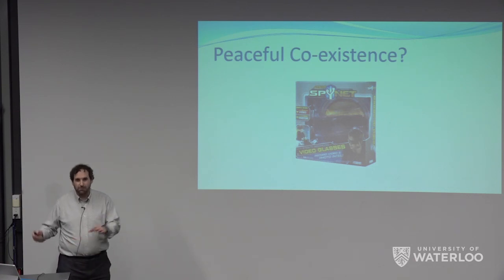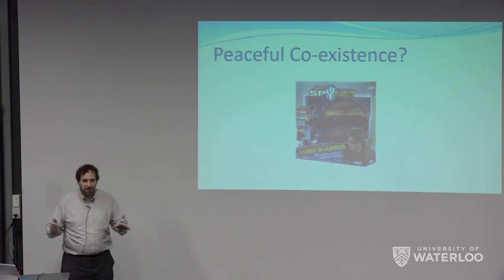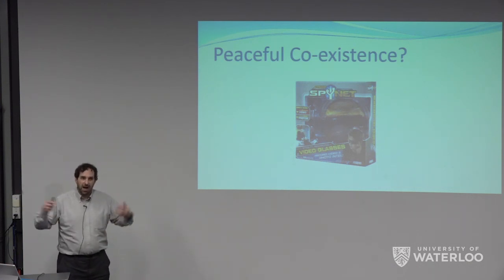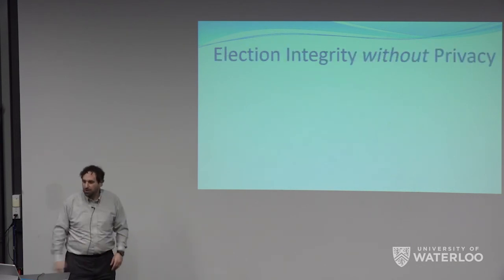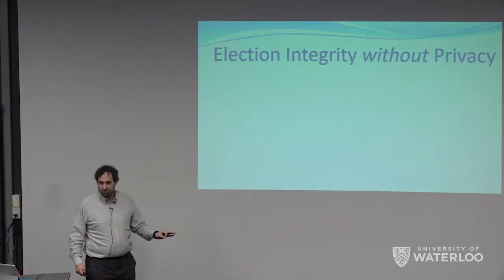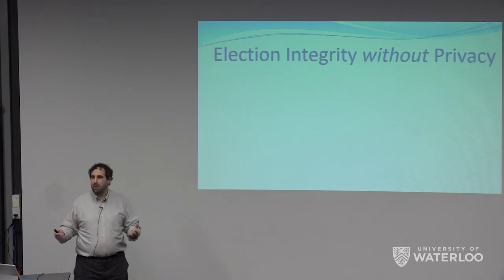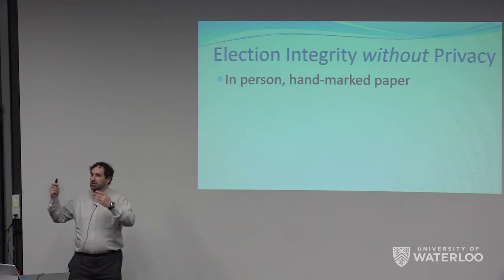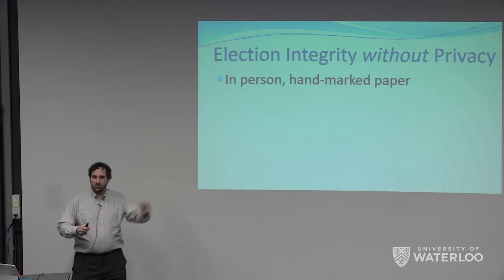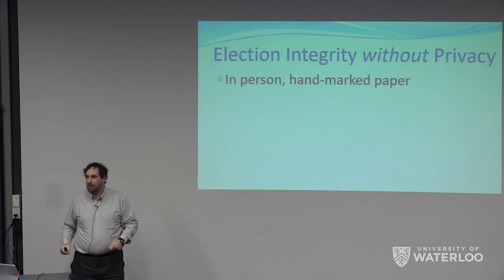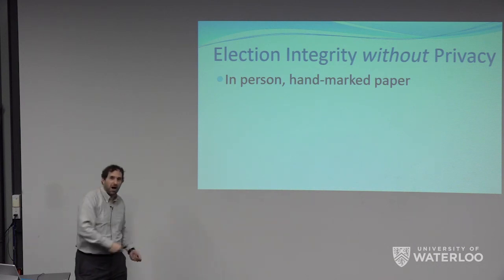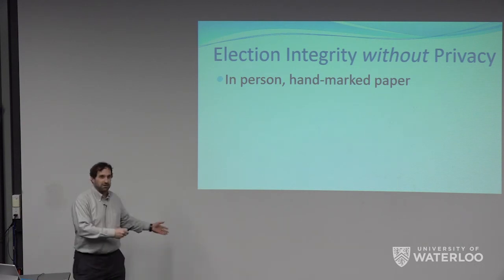If we're not worried about privacy at all — zero concern, anybody can see my vote — with the benefits of modern technology, what would a good high-integrity election look like today? One possibility: you go into a polling station, register, sign in, and a poll worker puts your name on a ballot, maybe with a sticker so it's clear and unambiguous. You mark your ballot, give it back to the poll worker, they put it in a box.